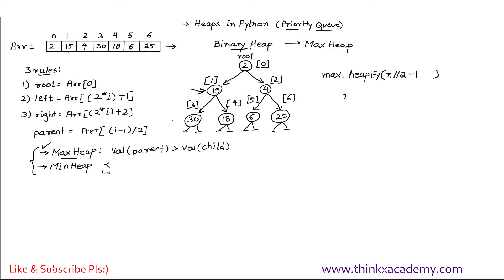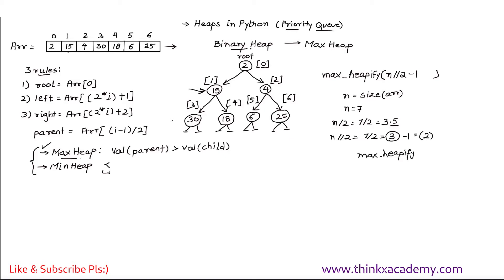Here n is 7 because we have 7 elements. 7 // 2 gives 3 (floor division removes the decimal), then subtracting 1 gives 2. So we call max heapify starting at position 2. This formula works generally to skip leaf nodes and start from the correct position.